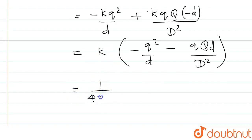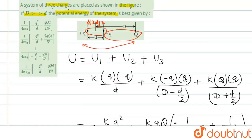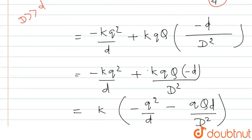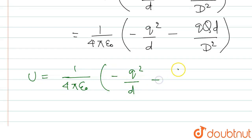Substituting the value of the constant k = 1/(4πε₀) and rewriting the rest of the equation, the final result is: U = 1/(4πε₀) × [-q²/d - q·Q·d/D²]. Checking the options, the correct option is: U = 1/(4πε₀) × (-q²/d - q·Q·d/D²). This is the correct answer.